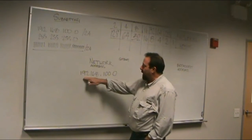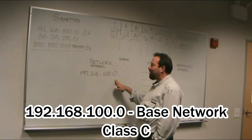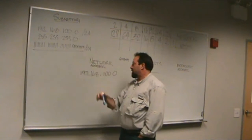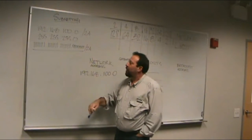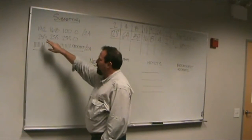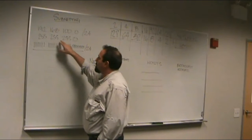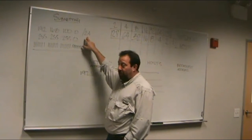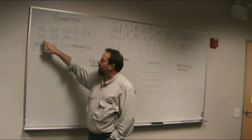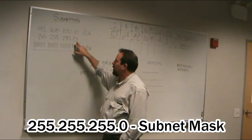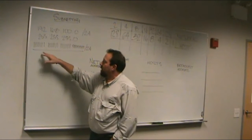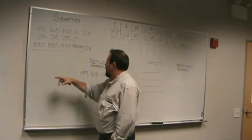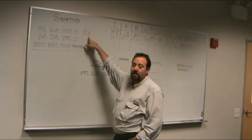Typically, we are going to take a base network and divide it into new networks — that's what subnetting means, taking a network and dividing it. Everything is based on the subnet mask. When you see a slash 24, our subnet mask is 255.255.255.0, and that represents three groups of eight octets. Three times eight is 24, so we say slash 24.